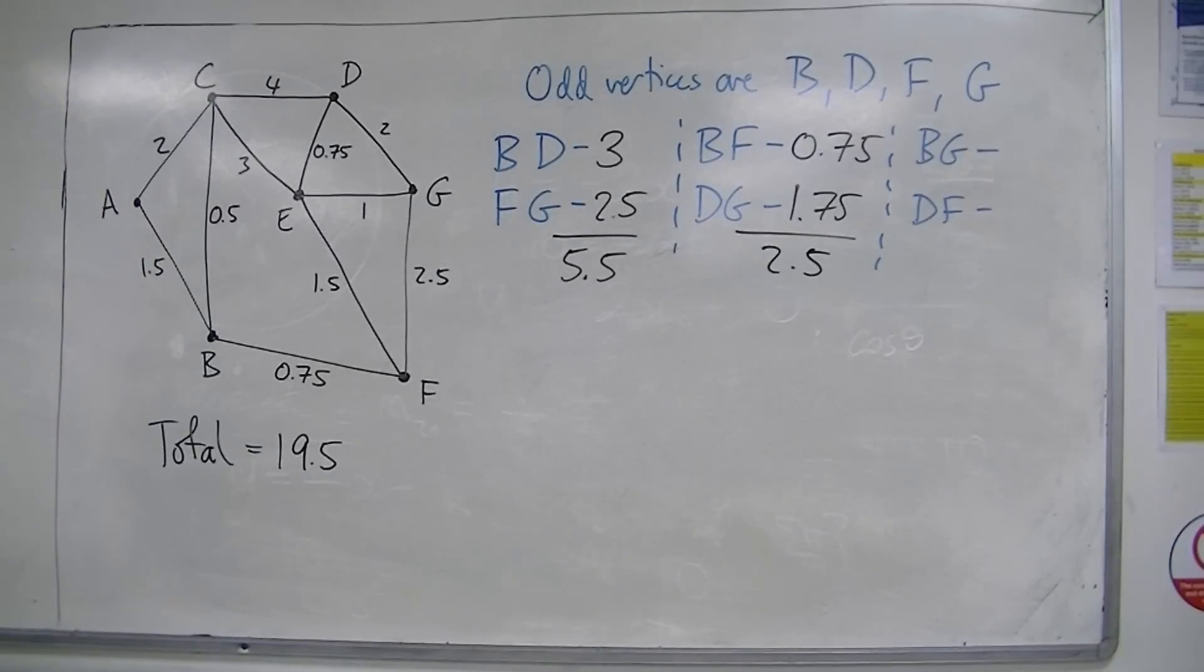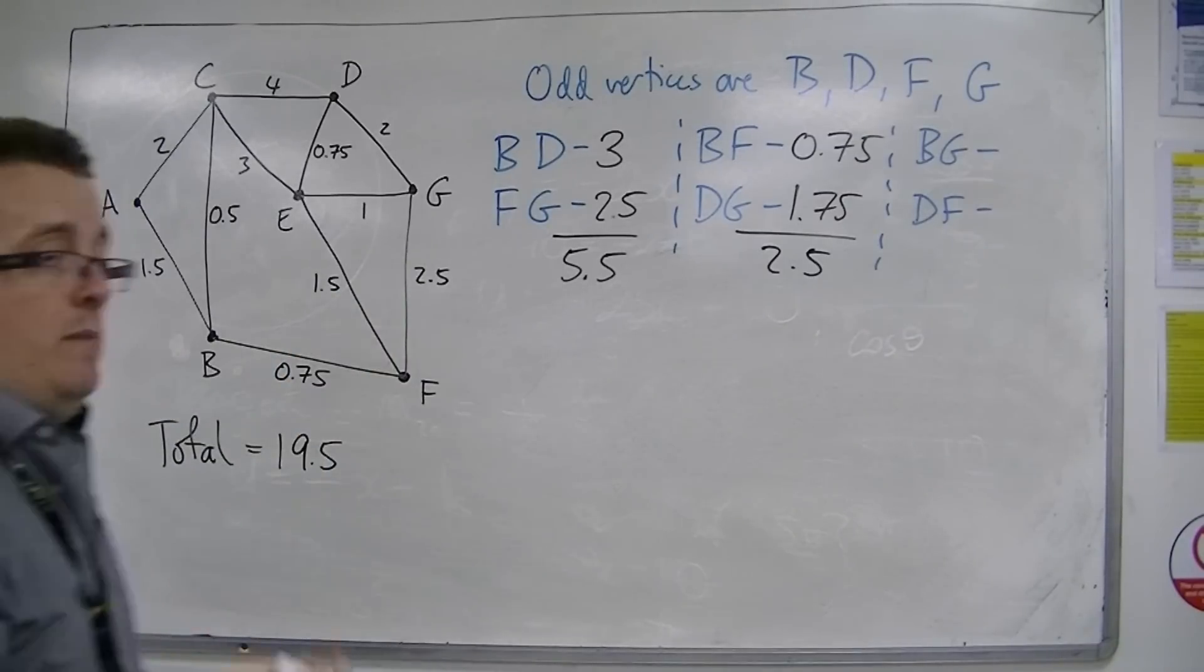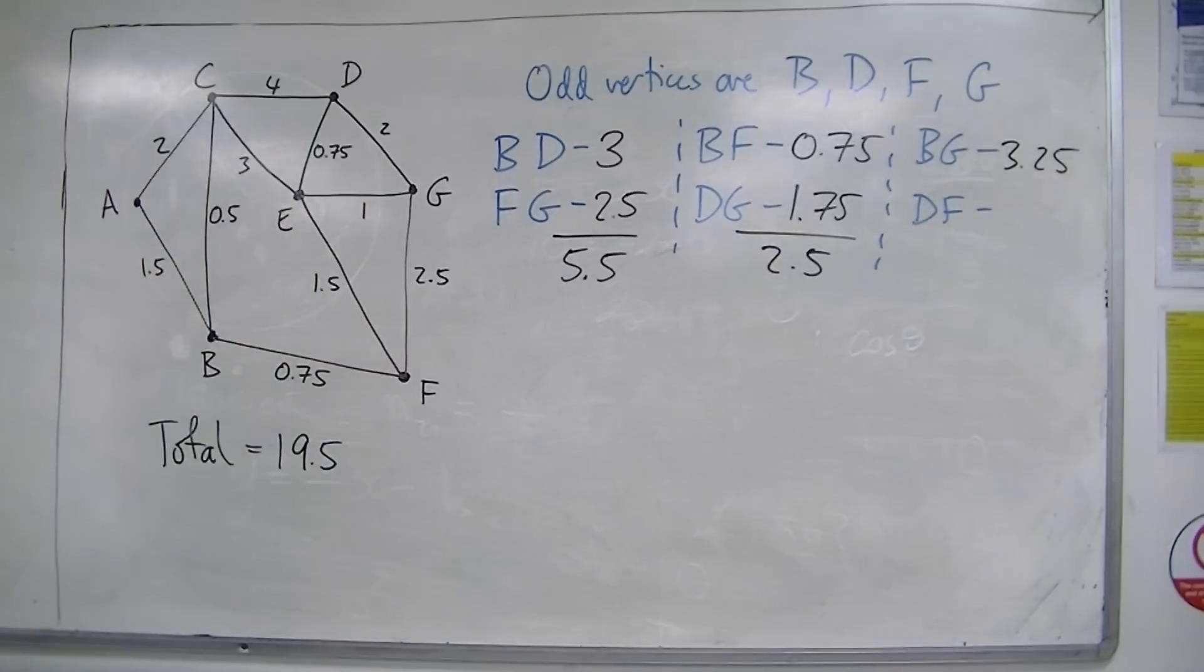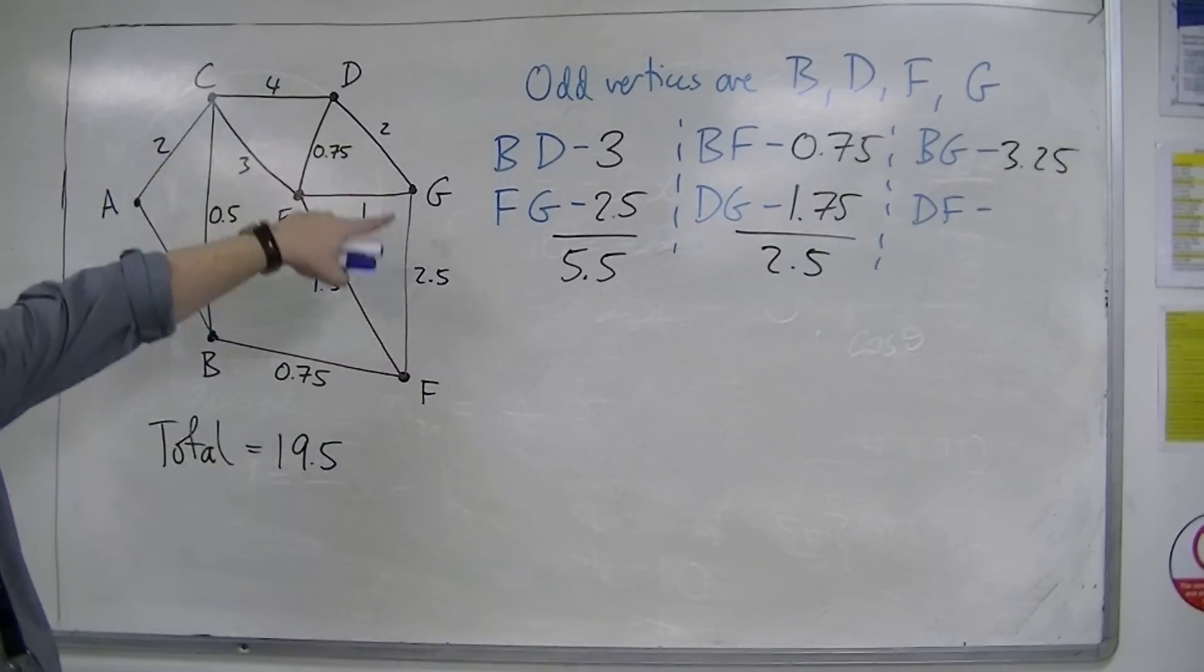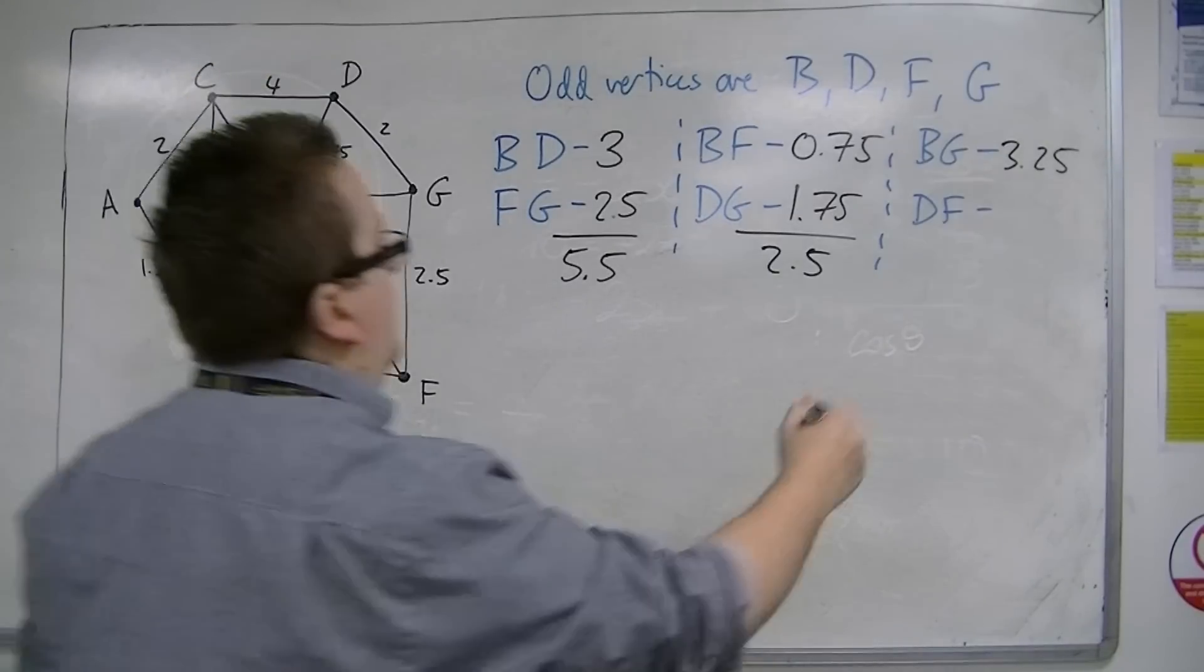Then finally, we've got B to G, we've got 4.5 there, we've got 2.25. So that would be the shortest.